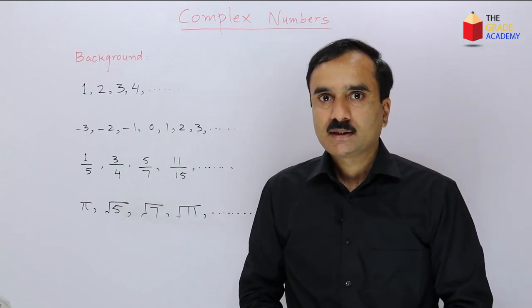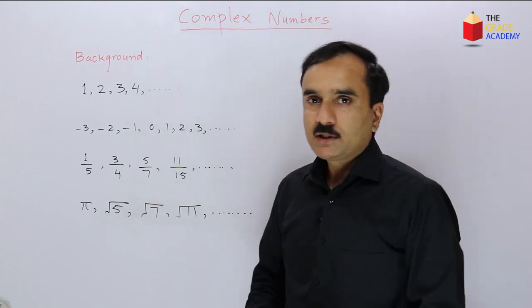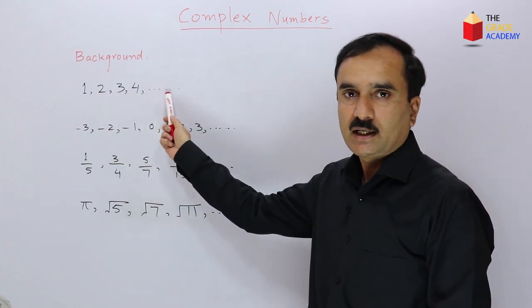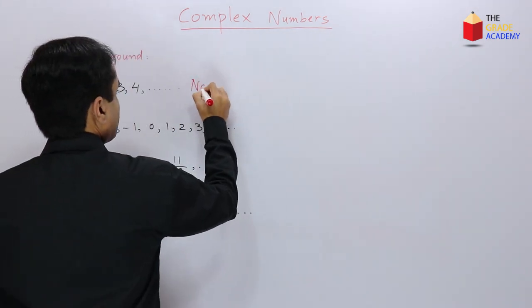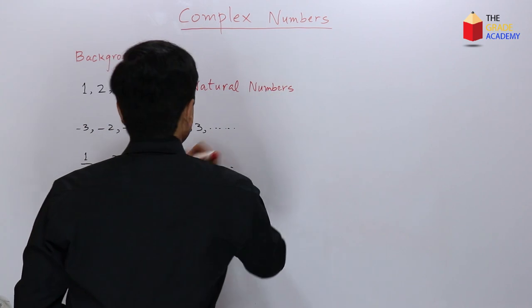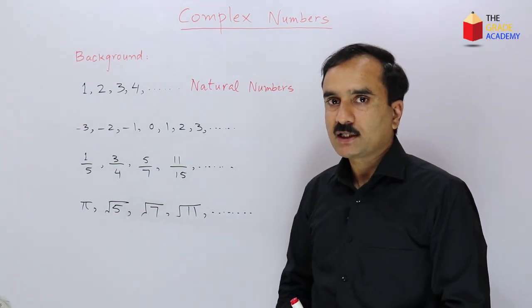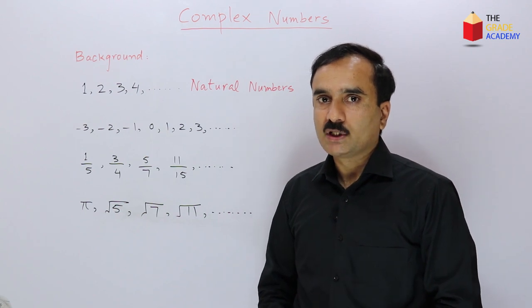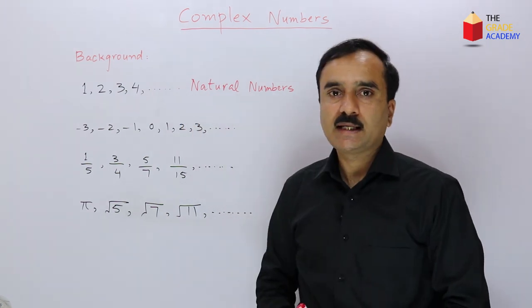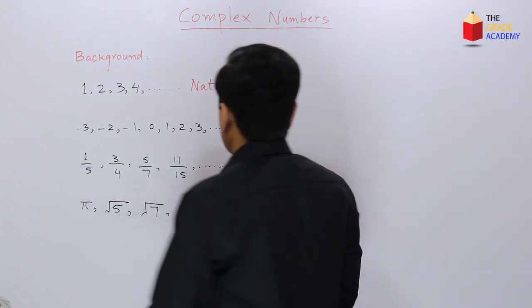We will discuss the set of numbers that existed before the introduction of complex numbers. Earlier mathematicians used natural numbers for counting things. These were the earliest known numbers in history and they are called natural numbers. We will see that all the systems that existed before complex numbers had some limitations or shortcomings. With the introduction of zero and negative numbers, we got a new set of numbers called the set of integers.